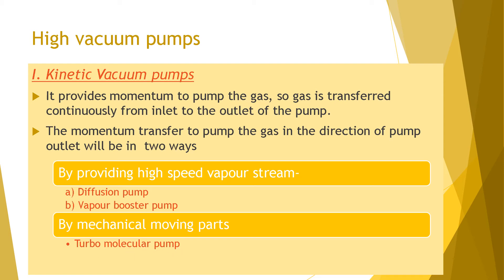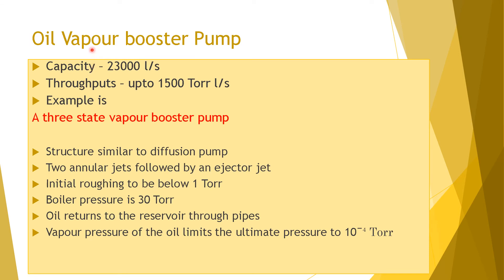The oil vapor booster pump transfers momentum using a high-speed vapor stream. Its pumping capacity is up to 23,000 liters per second and throughput is up to 1,500 liters per second. An example is a three-stage vapor booster pump. Its structure is similar to a diffusion pump, with annular jets followed by an ejector jet. Initial roughing must bring pressure below 1 torr; boiler pressure is 30 torr. The vapor pressure of the oil limits the ultimate pressure to 10⁻⁴ torr.